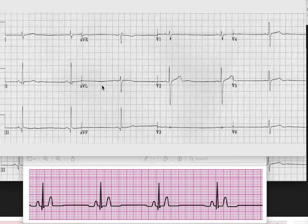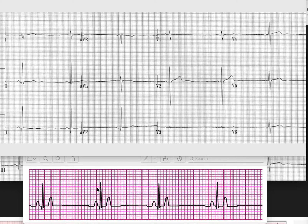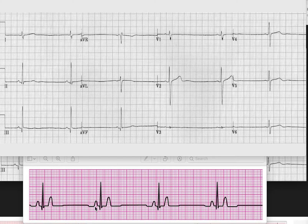Basically the name says it all — it is bradycardia, the heart is going slow. If you look here: 300, 150, 100, 75, 50, 40 — so the heart rate here is almost 45 beats per minute. You can go from here to here. It has a beautiful P-wave, QRS complex and T-wave. This is how sinus bradycardia looks.